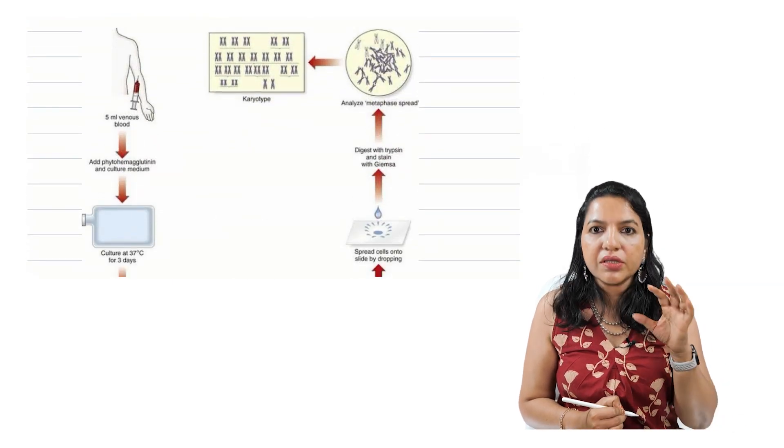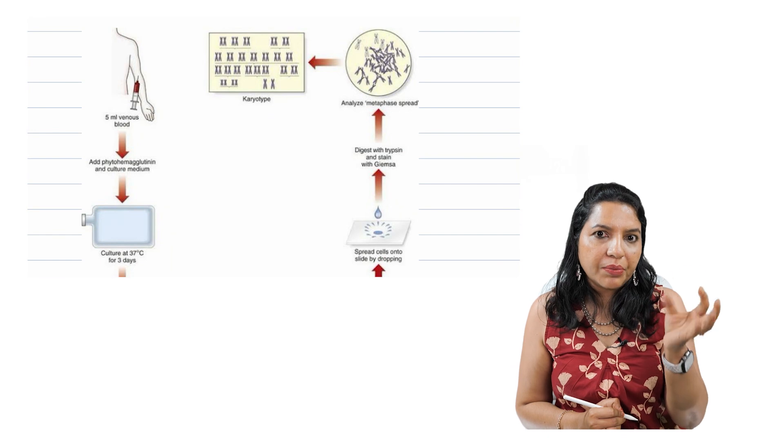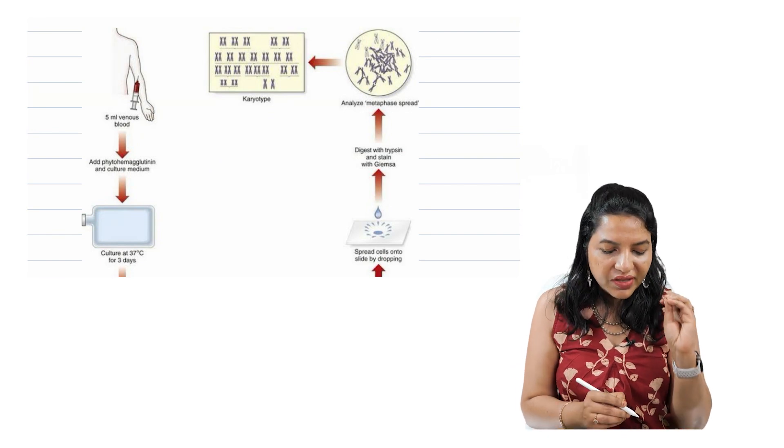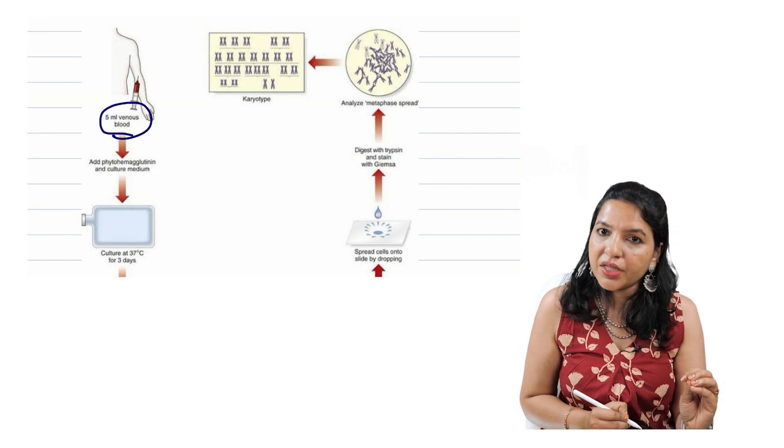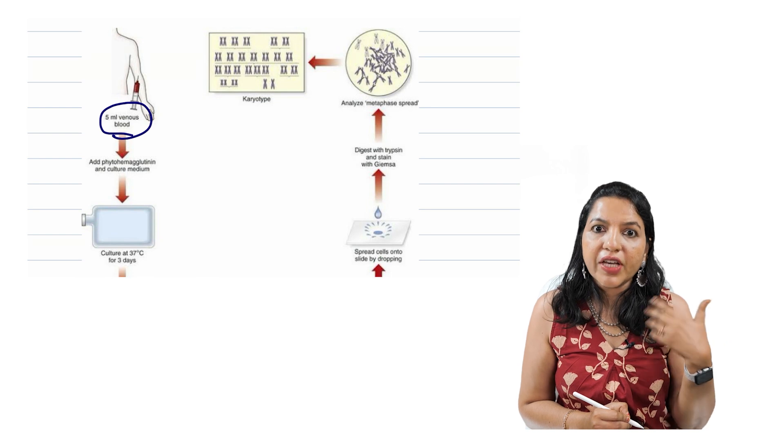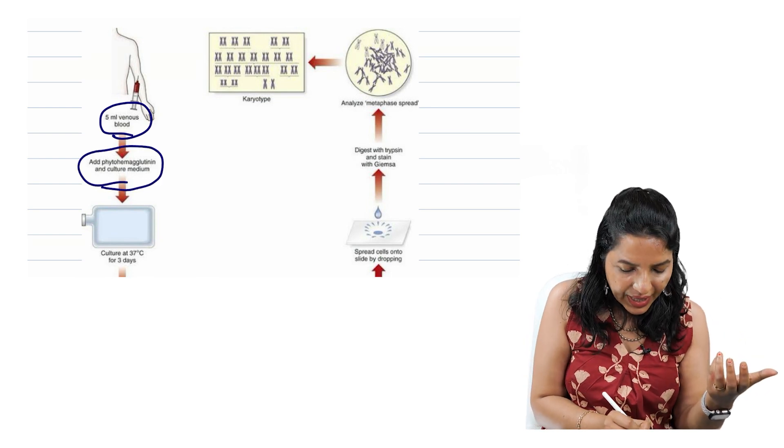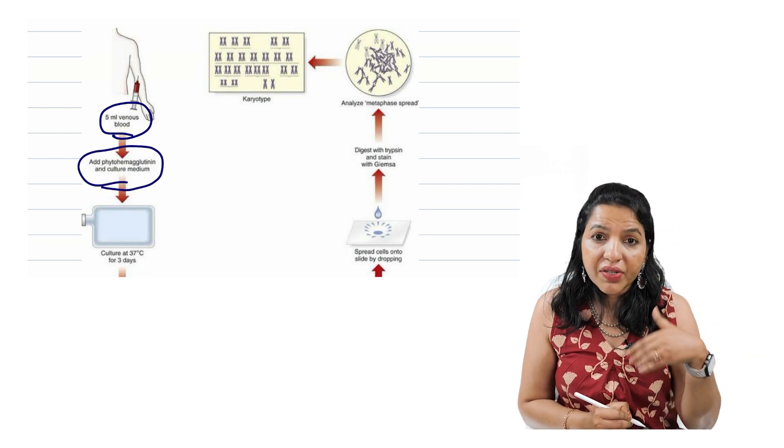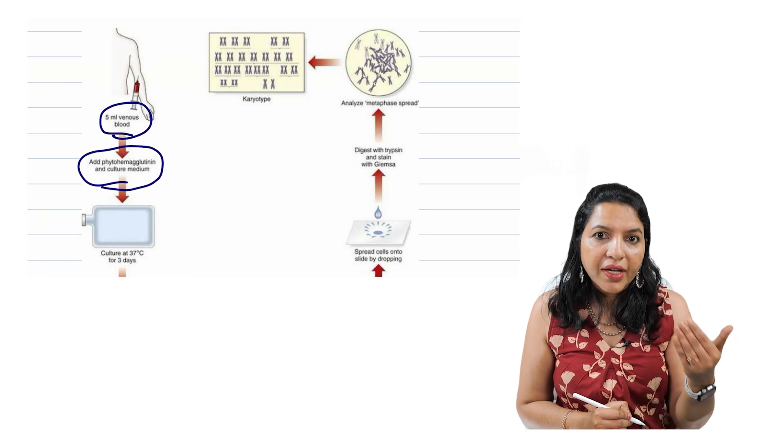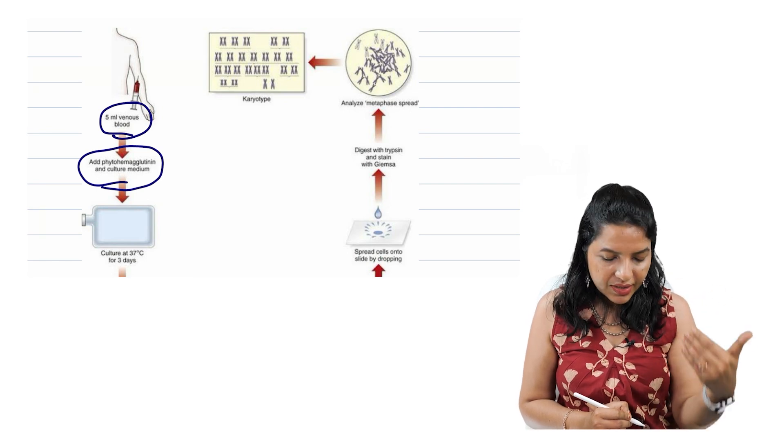And the next question that was asked is arrange the steps of karyotyping in the correct order. So the first thing is that we have to collect the venous blood. Then what we have to do is we have to culture. So for that we are adding phytohemagglutinin and we are culturing the cells because for karyotyping a growing cell is required.